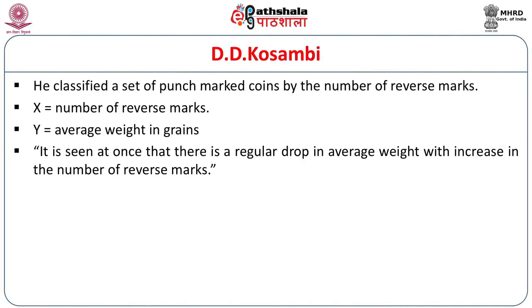Kosambi was looking at the weight loss of a coin relative to the duration of its circulation. He classified a set of punch mark coins by number of reverse marks — also known as control marks, shroff marks, or gilt marks — the marks of checking the coins. According to Kosambi, these marks were made by gilts, shroffs and officials who checked the coin time and again. He said the more reverse marks, the longer the coin had been in circulation — so it is inversely proportional to weight.